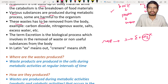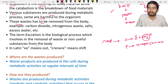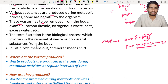During catabolism, proteins are broken down leading to the production of nitrogenous compounds like urea, uric acid, and ammonia. These are toxic materials that must be removed from the body. The removal of toxic materials and non-useful components — including carbon dioxide, nitrogenous waste, salts, and excess water — is known as excretion.